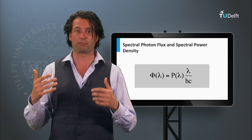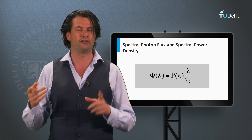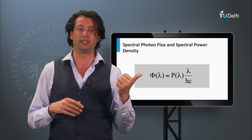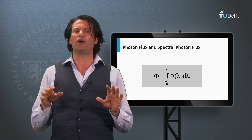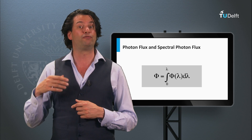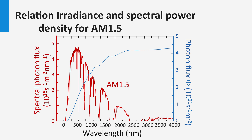The photon energy is determined by the product of Planck's constant and the light velocity divided by the wavelength. This gives the relation between p and phi. If we integrate the spectral photon flux over lambda, we get the photon flux. In this graph, the spectral photon flux is presented, and the area under this graph represents the photon flux. The blue line shows the photon flux in the AM 1.5 spectrum up to wavelength lambda, and up to 4000 nanometers the AM 1.5 spectrum has a photon flux of 4.3 times 10 to the power 21 photons per second per square meter.